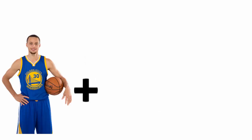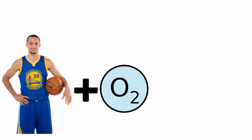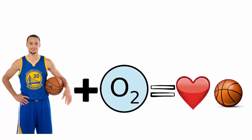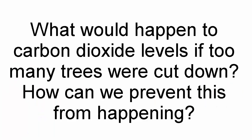Trees impact humans from breathing because humans inhale oxygen and exhale carbon dioxide. That means trees can't give us the oxygen that is needed for us to breathe, because they need to inhale our carbon dioxide to live. What would happen to carbon dioxide levels if too many trees were cut down? And how can we prevent this from happening?